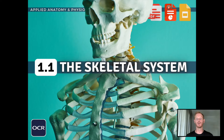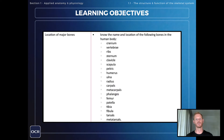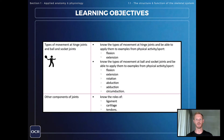Hello and welcome to another complete OCR GCSE PE lesson. In this one we'll be covering the final learning objective in chapter one on the structure and function of the skeletal system, which is to know the roles of three components of synovial joints: ligaments, cartilage and tendons.